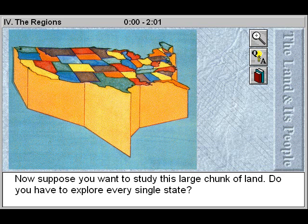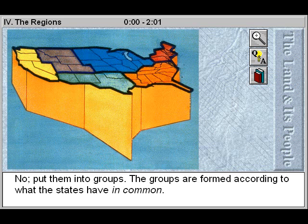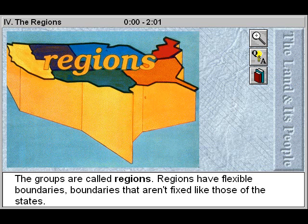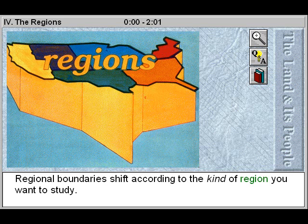Now suppose you want to study this large chunk of land. Do you have to explore every single state? No. Put them into groups. The groups are formed according to what the states have in common. The groups are called regions. Regions have flexible boundaries — boundaries that aren't fixed like those of the states. Regional boundaries shift according to the kind of region you want to study.